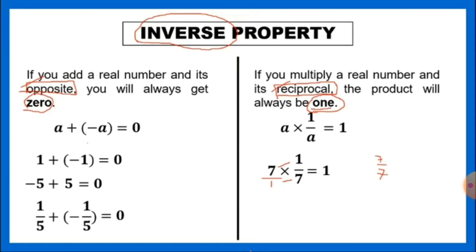Another example: two-fifths times its reciprocal, which is 5 over 2. When you multiply them, 2 times 5 is 10 and 5 times 2 is also 10, so 10 divided by 10 equals 1. For addition, when you add a number and its opposite, the sum is always 0. For multiplication, when you multiply any number by its reciprocal, the product will always be 1.